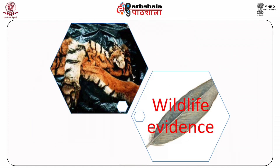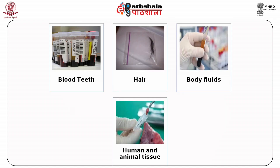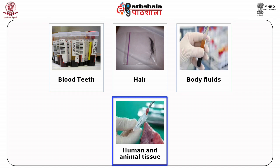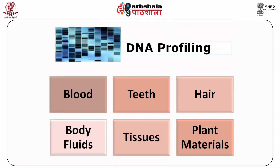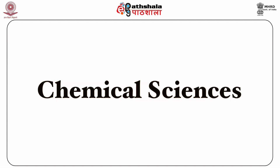In cases of wildlife offences, skin, hair, bones, feathers, horns, etc. are commonly found as evidence. In the serology division, items sent as evidence include hair, blood, body fluids and tissues. For DNA profiling, blood, teeth, hair, body fluids and tissues of human and animals, as well as plant materials are brought in. Now let us talk about chemical sciences.